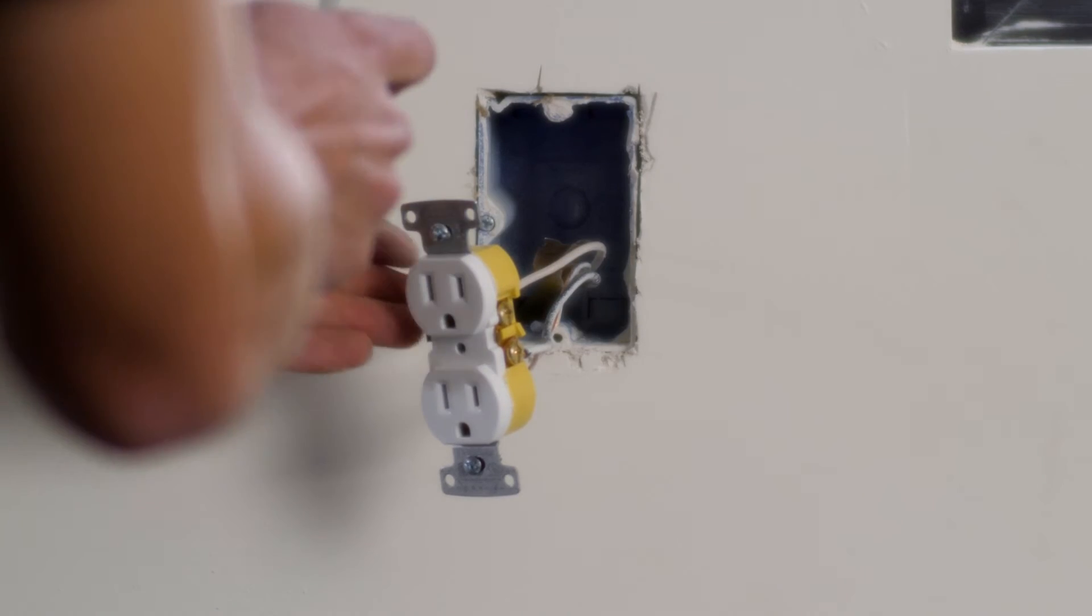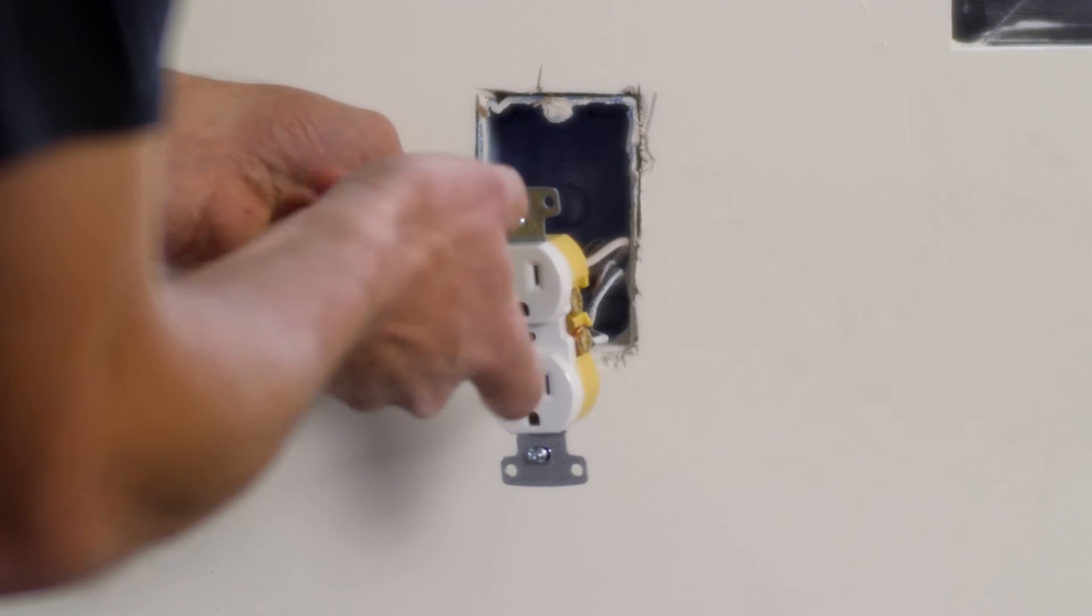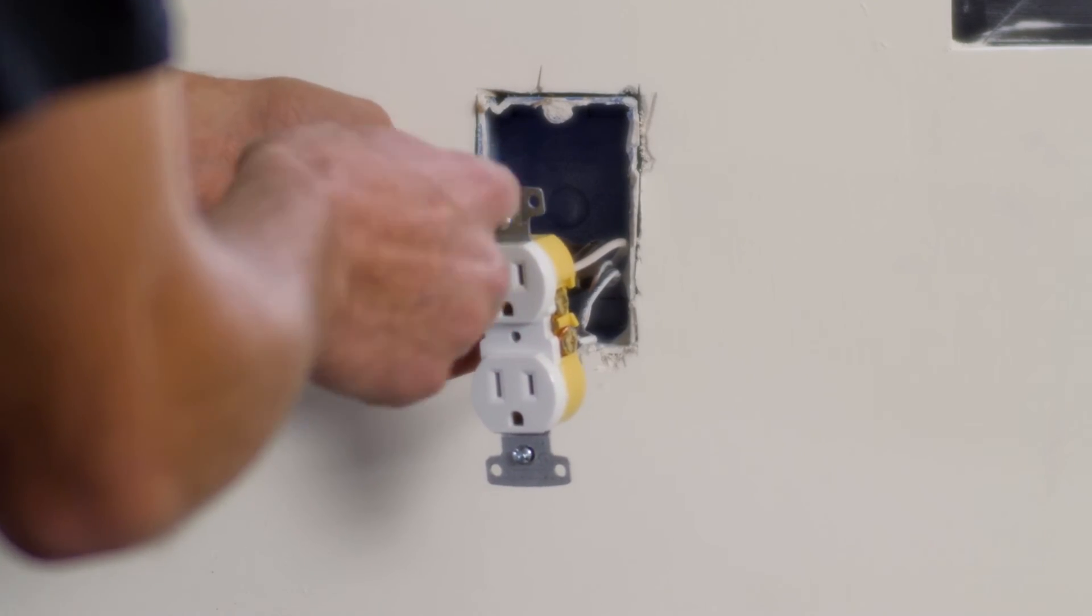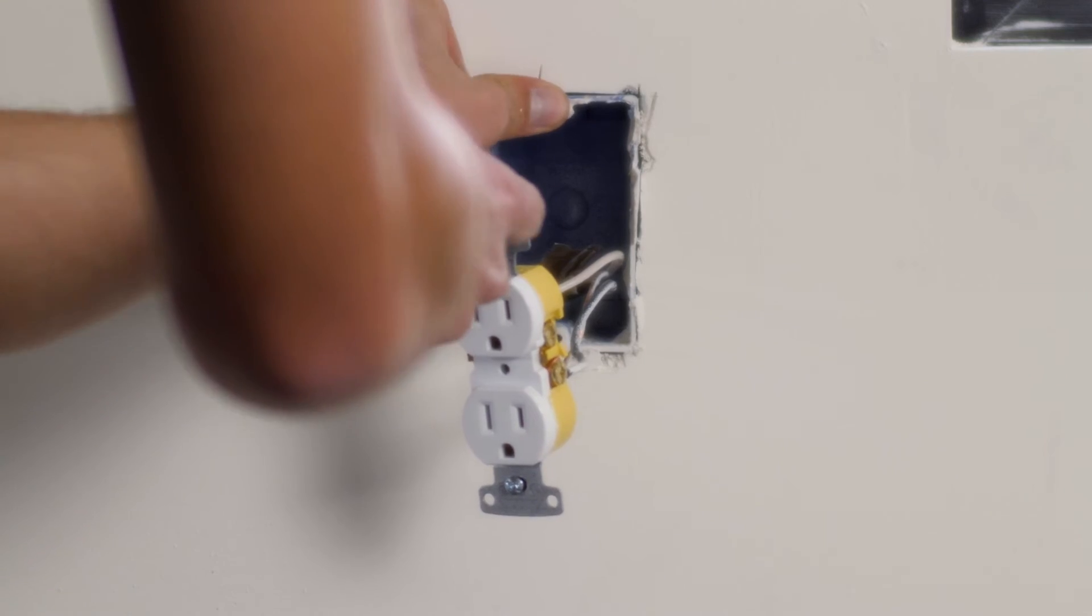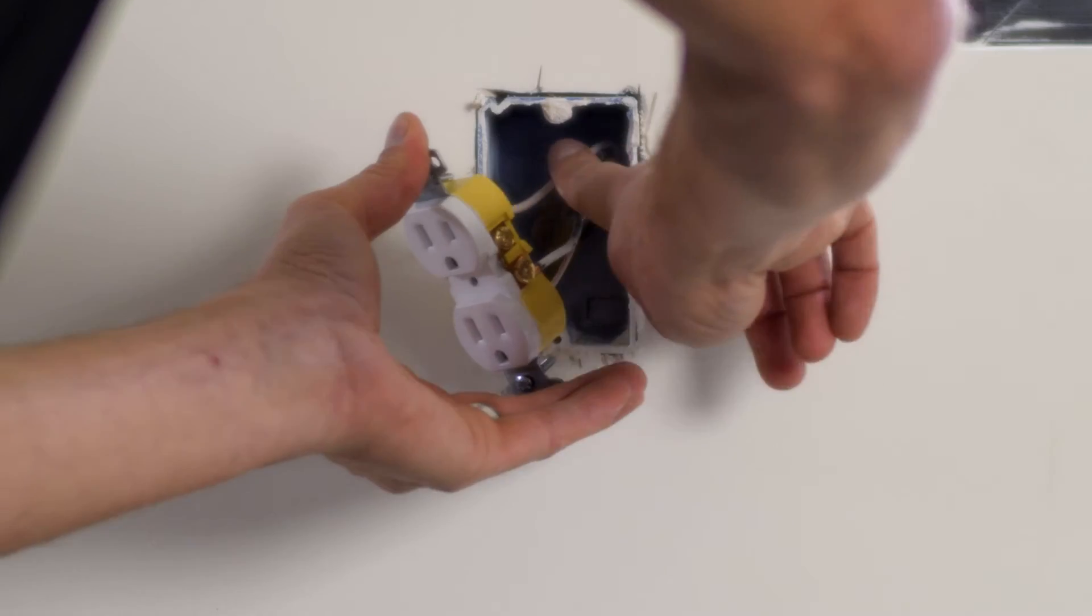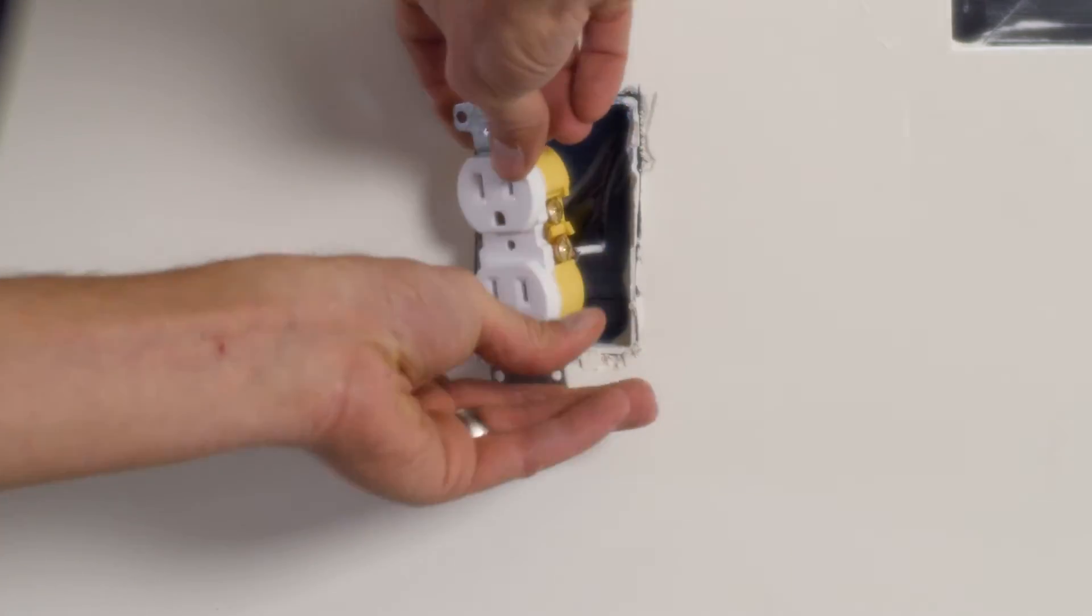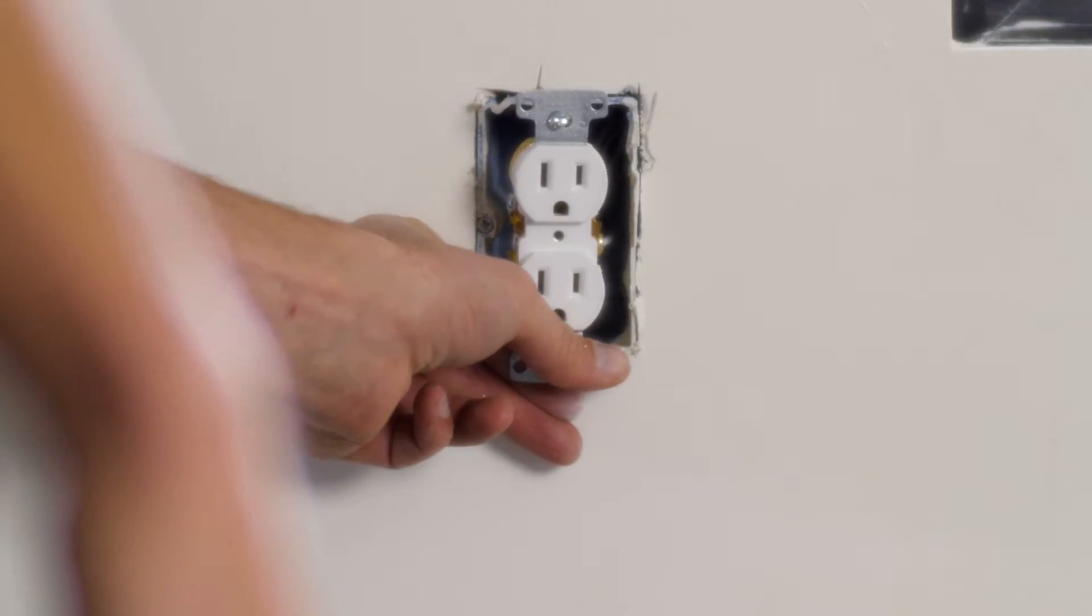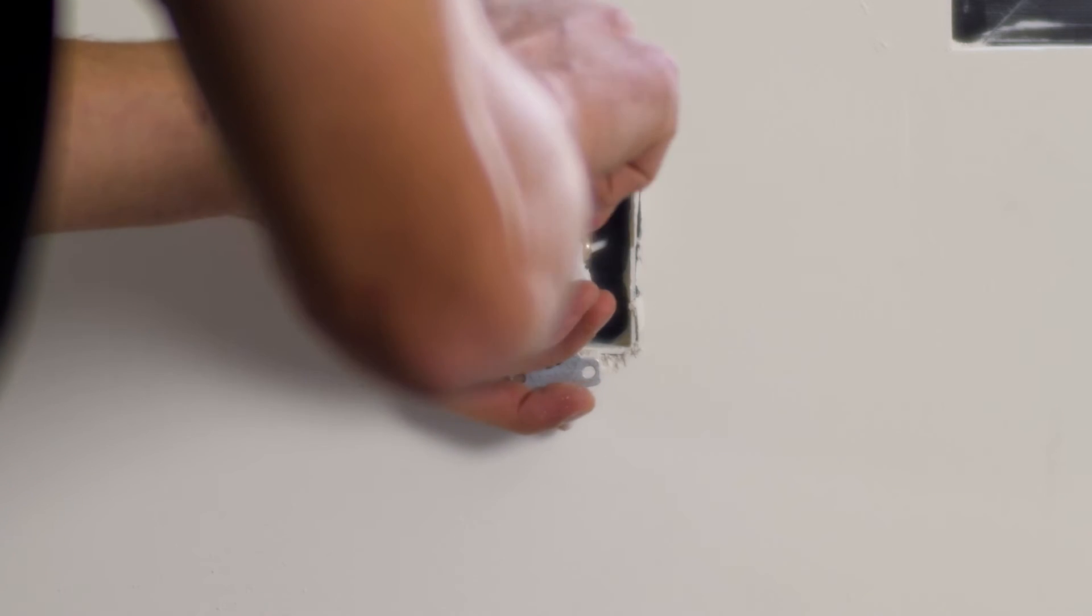Now I'm using my Phillips screwdriver to back this box out of the wall until I'm flush. I like that positioning there. I'm going to proceed by folding my wires into the wall.